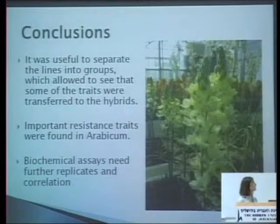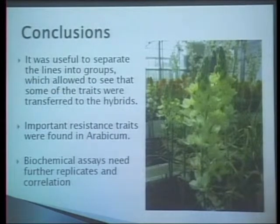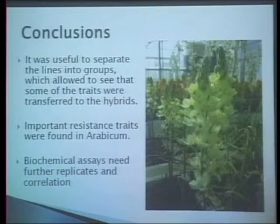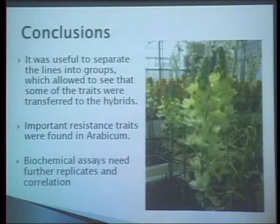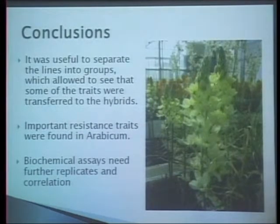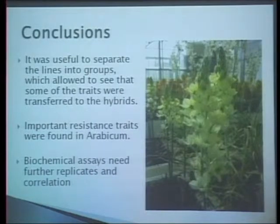To conclude, it was very useful to separate the lines into groups because this allowed us to see that some traits were transferred to the hybrids, such as resistance, flower size, and color. We saw very important traits in Arabicum, and this was the first time that such a resistance analysis was made in this line. The Tirsoides group also showed very good resistance, whereas the Dubium were very susceptible, but Dubium have interesting traits in flower color for breeding programs. Biochemical assays need further replicates and correlation; we believe measurements need to be done at more stages along the season to make proper comparison of protein levels and activity, because at the time of sampling the proteins were already degrading.